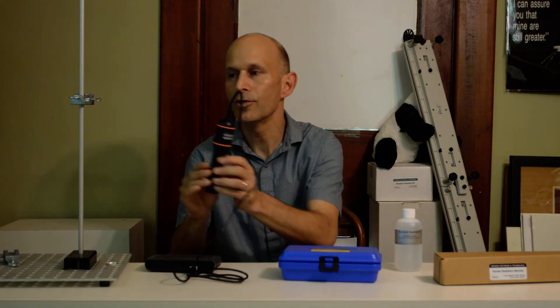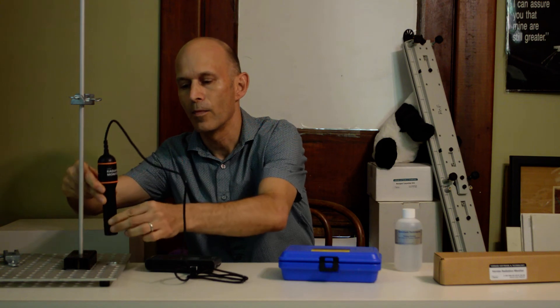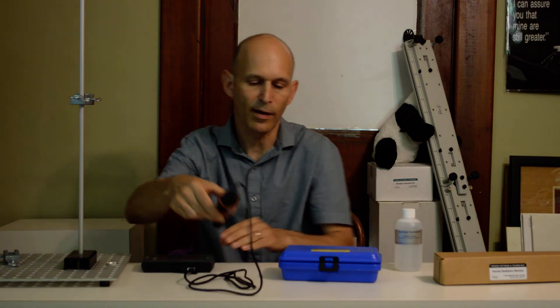This is a Vernier radiation monitor. It's based on a Geiger-Muller tube, and I usually clamp it to a stand and bring it down close to the sample. Use a LabQuest II to collect data. It takes about a class period to get a good set of data and analyze it. The students can do something else while they're collecting data.